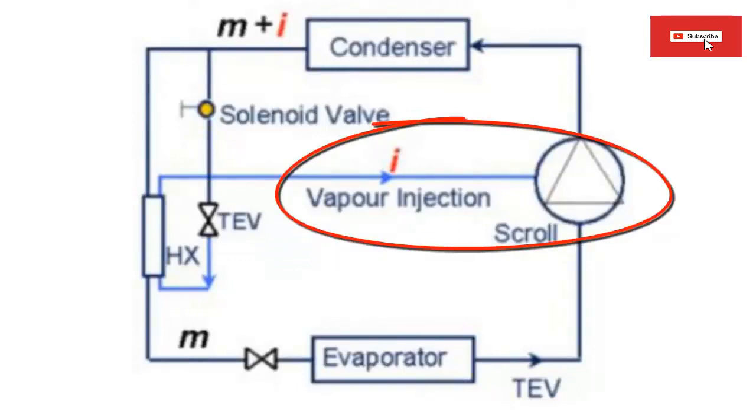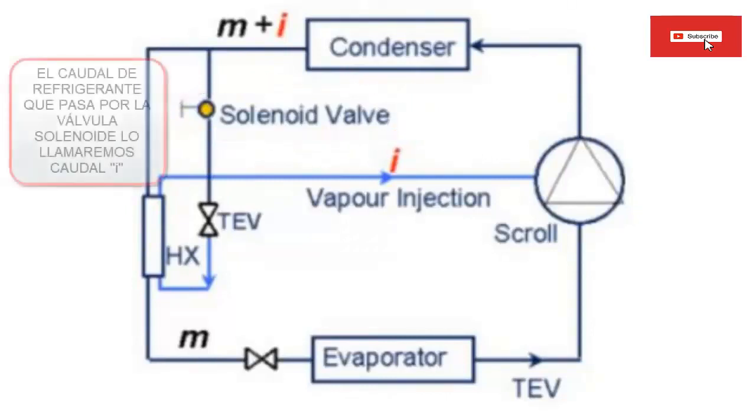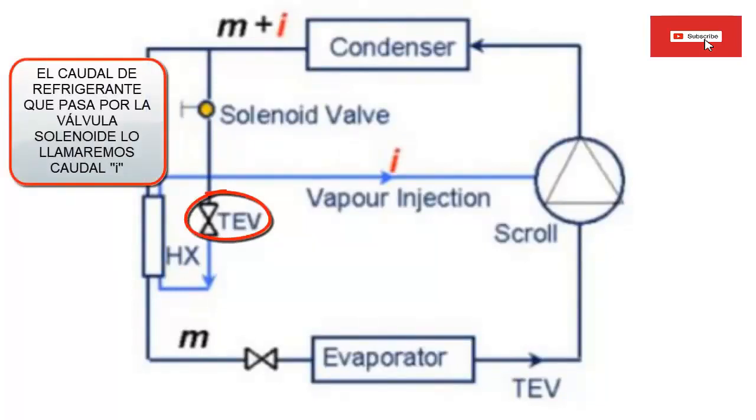3. In the economizer system, a solenoid valve is used to activate the passage of refrigerant at the condenser outlet with a flow that we will call I. 4. After the solenoid, an expansion valve is responsible for dosing and lowering the pressure of the refrigerant flow I.